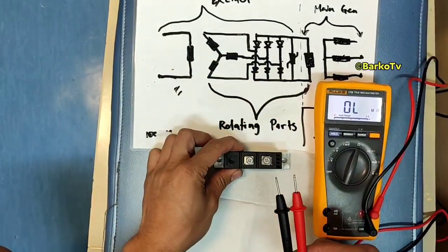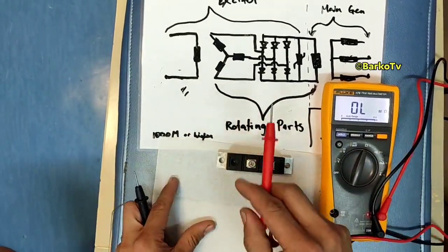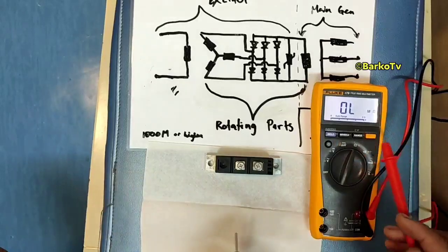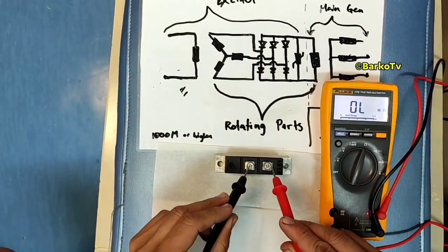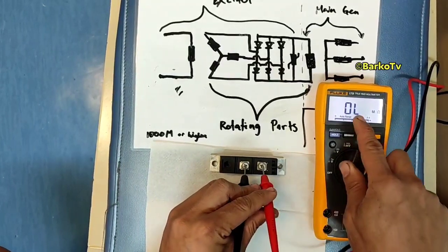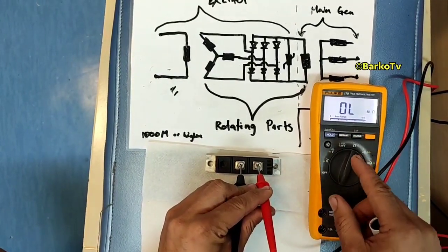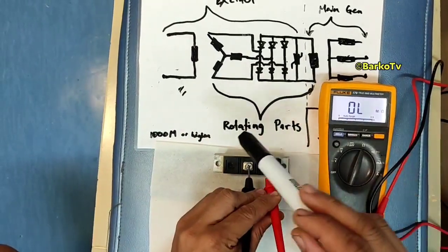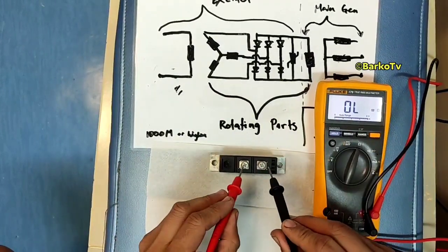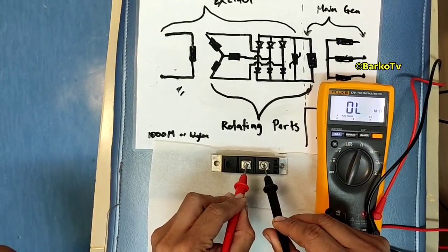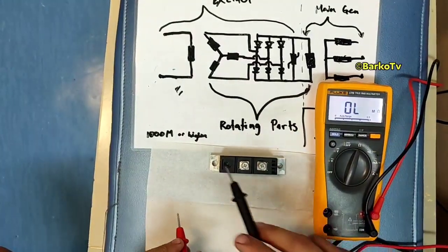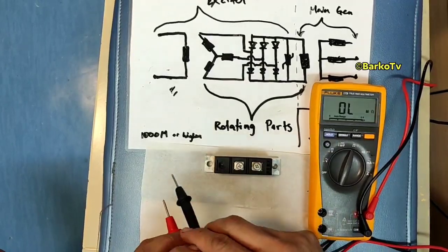In the varistor, the better or the good varistor reading is 1000 meg ohms or higher going to infinity. As you can see it's blinking, it's blinking, it means that is higher than 1000 meg. That is our reading.